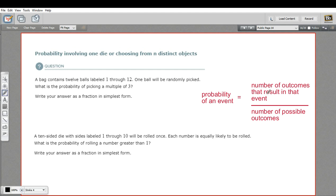And that fraction is the number of outcomes that result in the event you're looking for over the number of possible things that could have happened, the number of possible outcomes. So that might seem confusing at first if this is the first time you've seen it, but let's see how it works in the context of this problem.